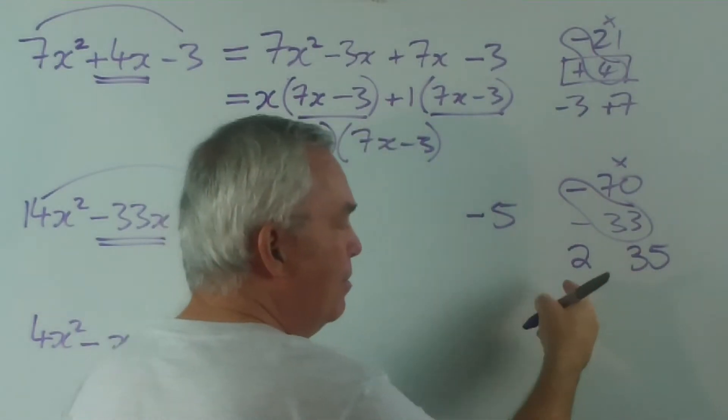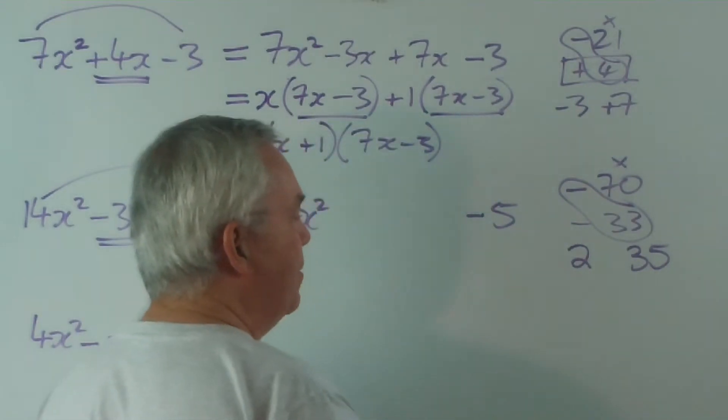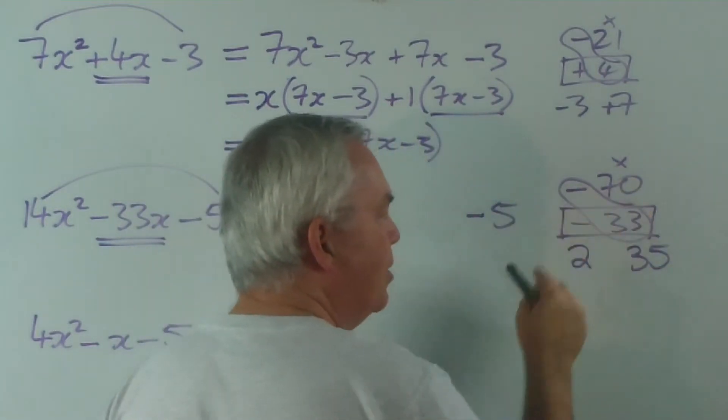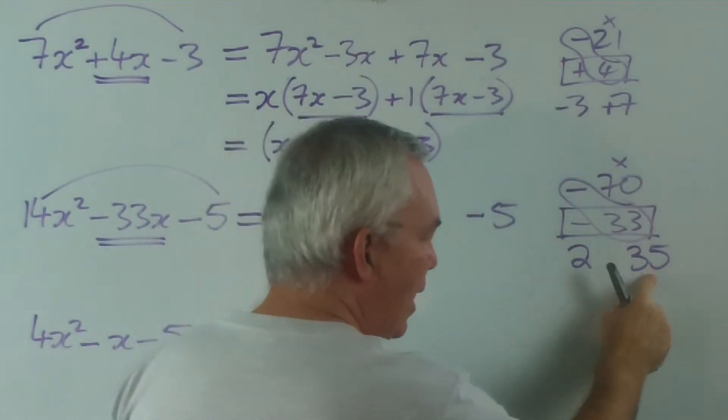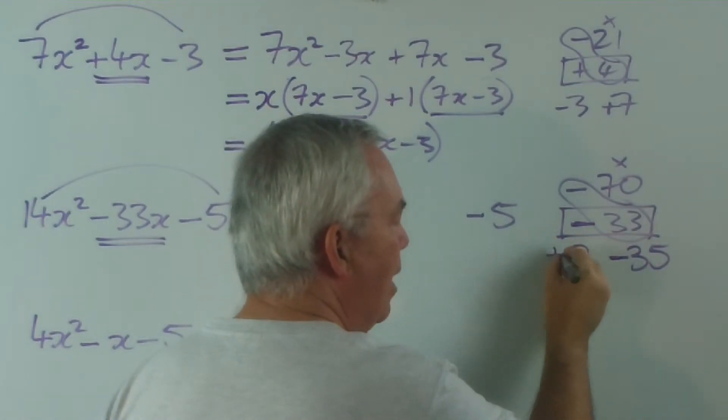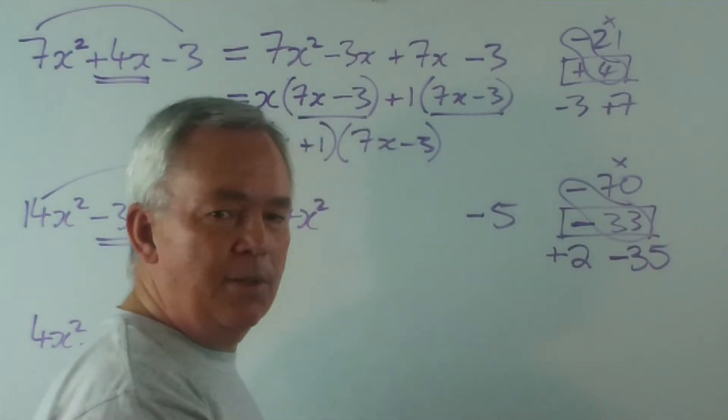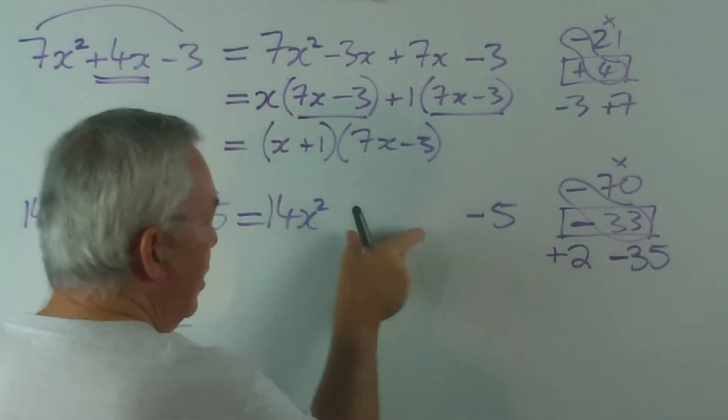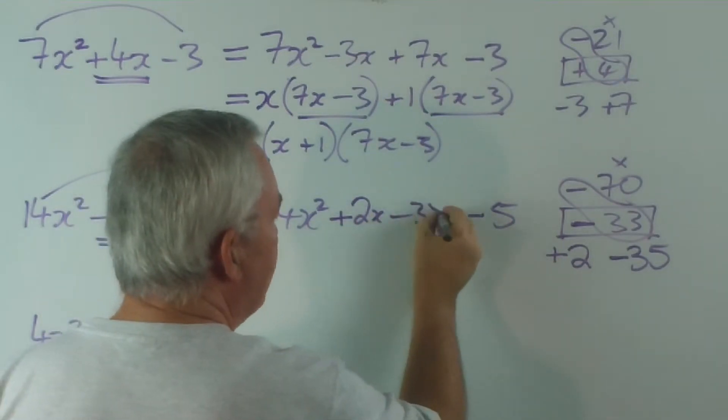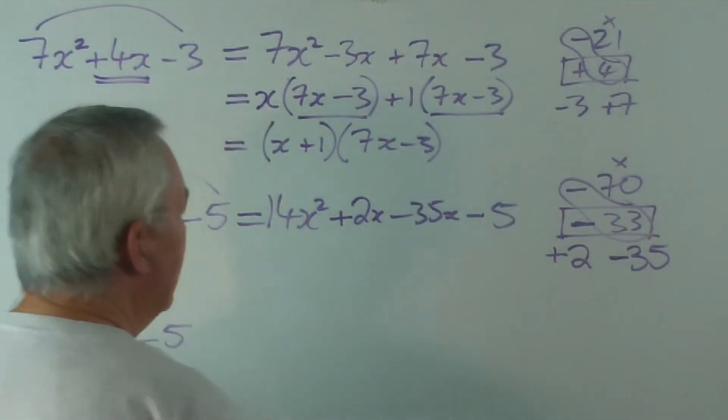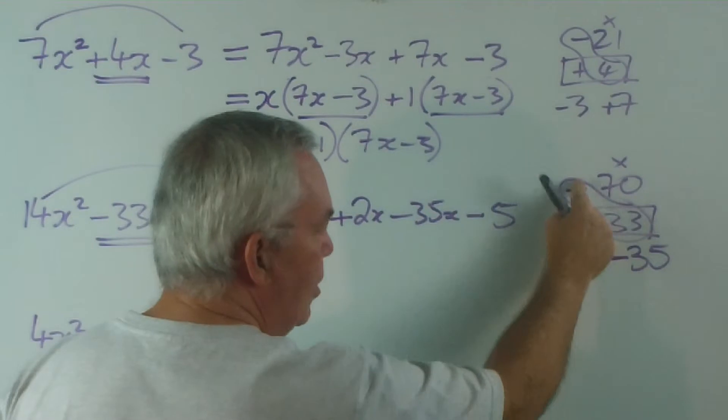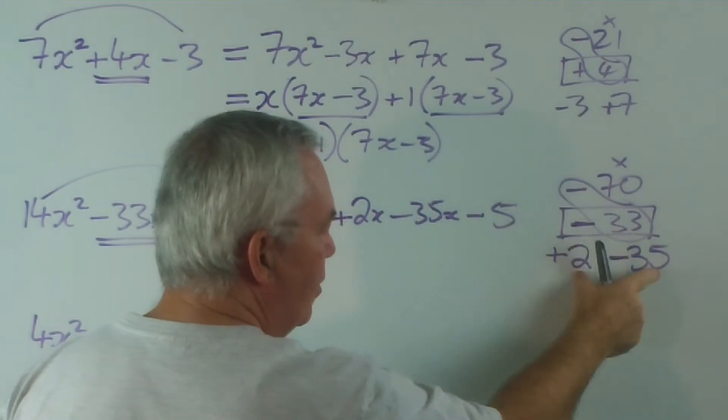Now that we've got the numbers, this is the beauty of this method that I teach students, now we can concentrate on getting the plus and minus signs. How do we get a minus 33 with these? Well, the large number has to have the same sign. And if I start at minus 35, I have to come up 2 to get to minus 33. So that's my combination. So I'm going to put it in here. I'm going to put my minus 33 plus 2x minus 35x. And that will replace my minus 33x over here. So you can see I've used this technique to split my minus 33 up into these two.